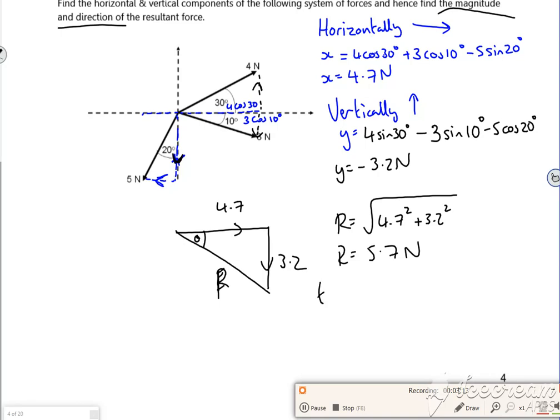And then if I look at the angle, so tan of theta is opposite over adjacent. So theta is 34 degrees roughly. Now that's below the horizontal, because it's going down. So I'm going to put below horizontal.